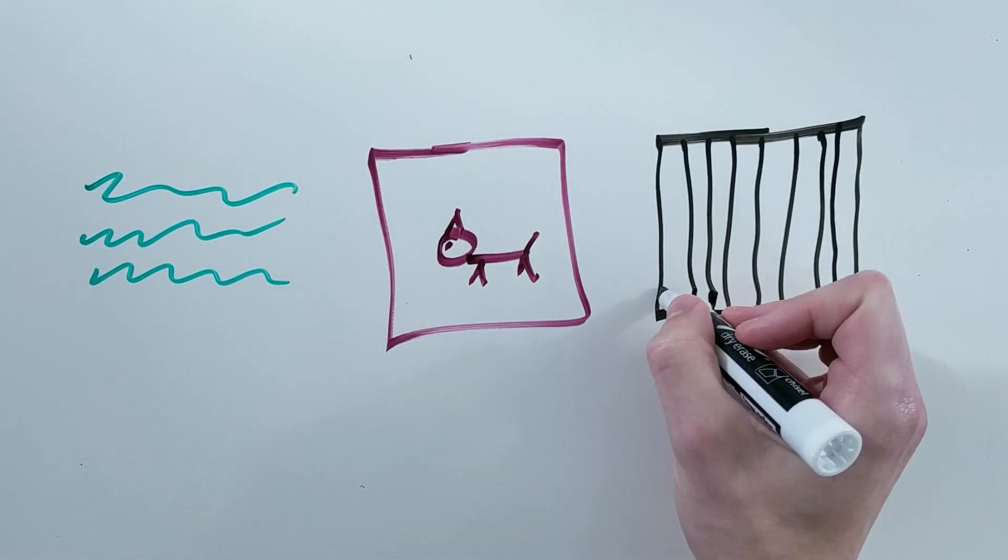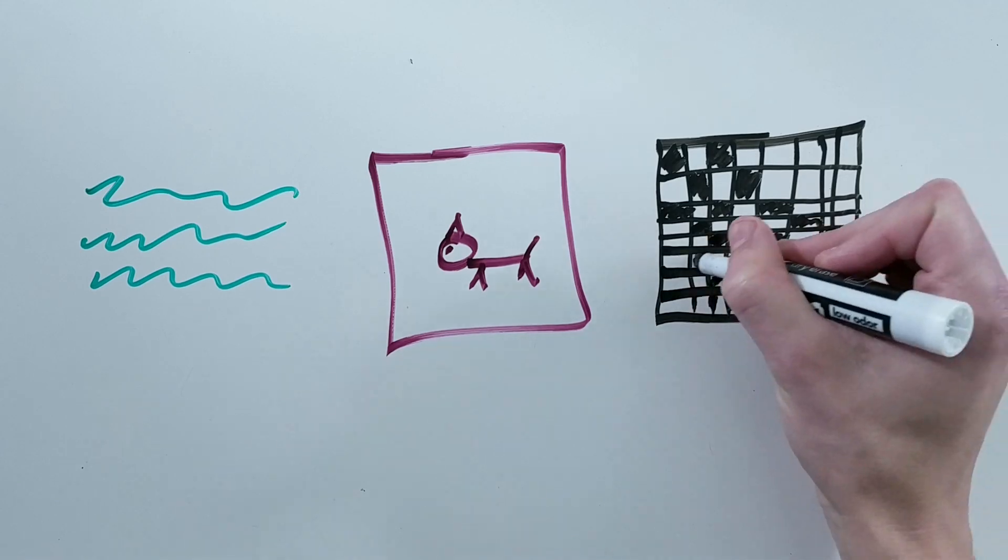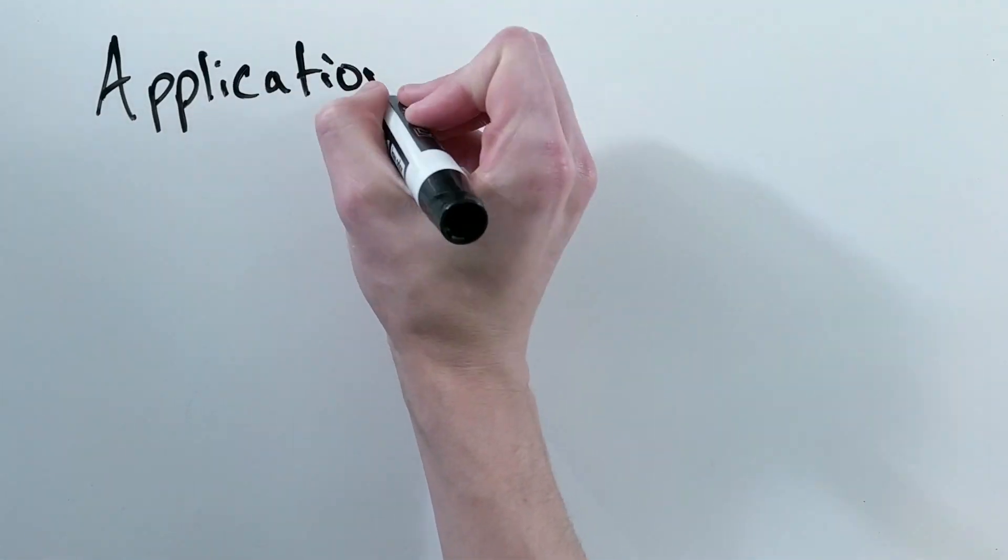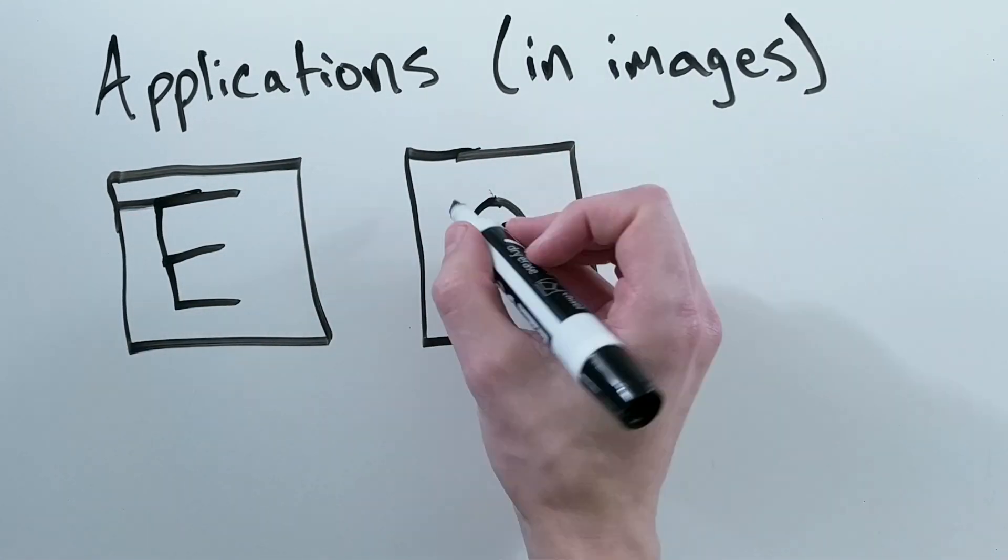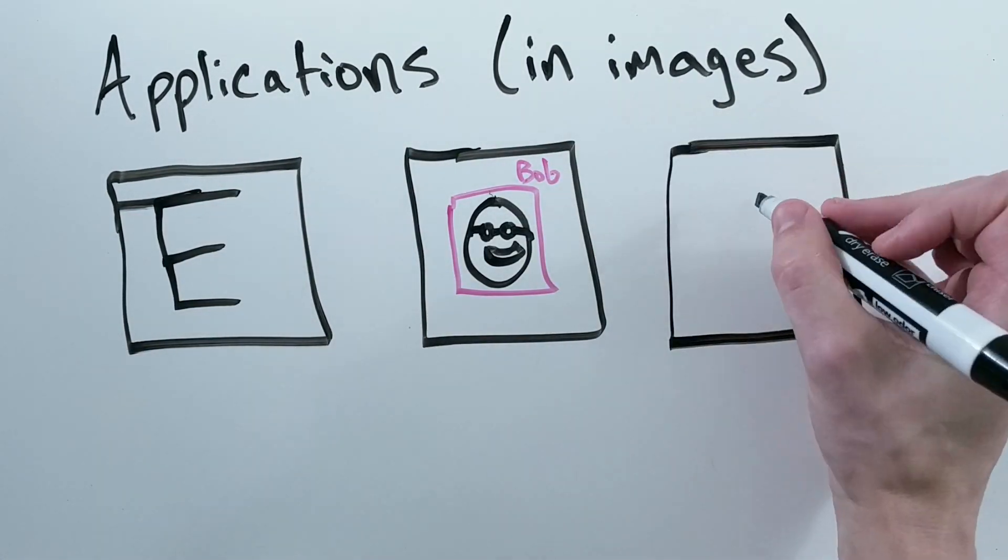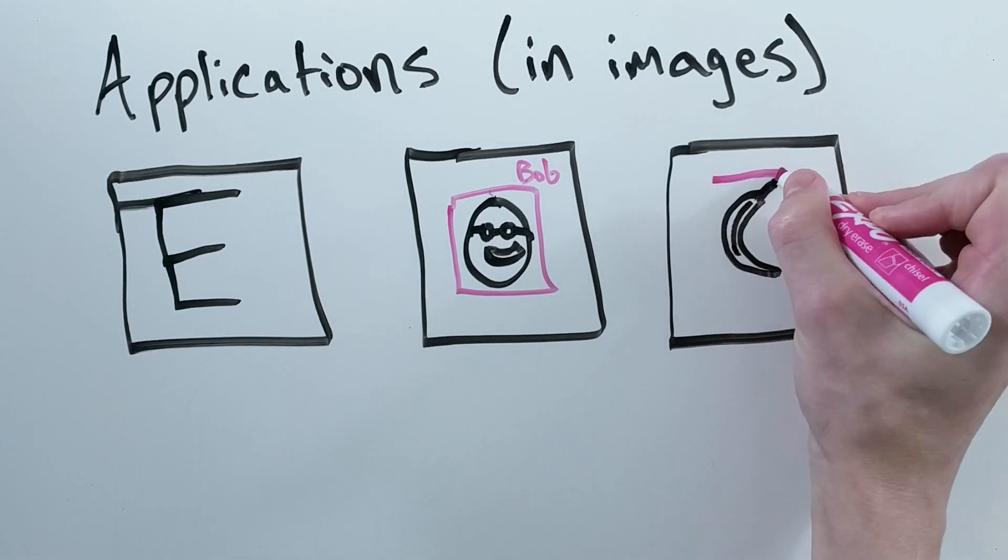In review, convolutional neural networks are useful anywhere data is spatially related. For example, convolutional neural networks have been very successful in doing anything with images, such as determining what letter is in an image, whose face is in that image, and detecting objects in images.